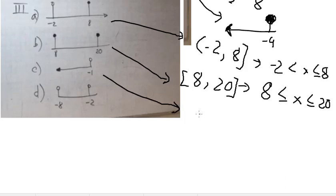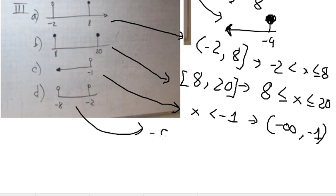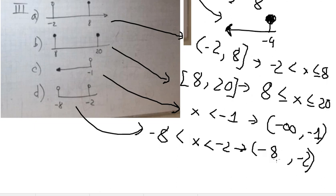This one is about s is smaller than negative one, and we can write it like this. We can write the parenthesis notation, and that is the answer for all the questions.